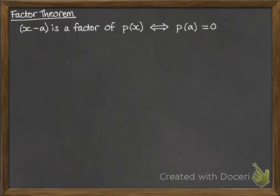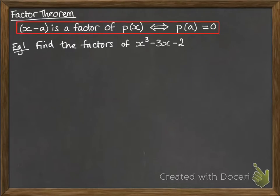What this is saying is p(x) is a polynomial. If we can find a value, which we're calling a here, where if you put it into the polynomial and you get the result of 0, then that tells you that a factor of that polynomial is x minus that value. So let's see how to really use this.